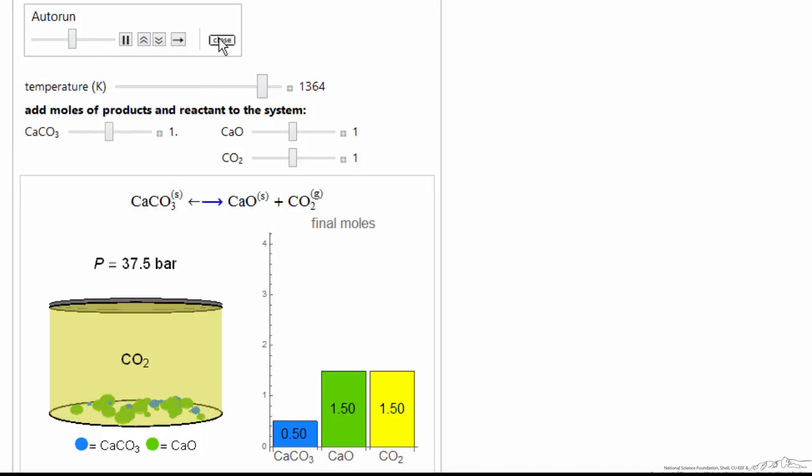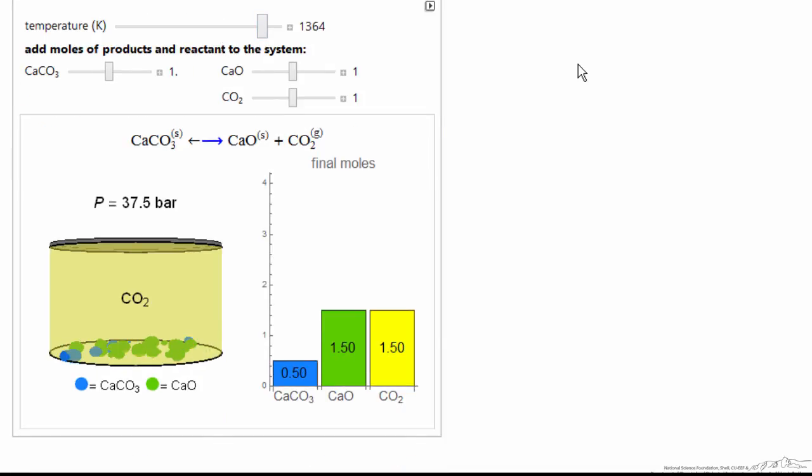We'll close this. So you should take this simulation and use it to better understand heterogeneous equilibrium. Because heterogeneous equilibrium is inherently different from when we have gas phase components on both sides. And we can reach equilibrium by lowering the pressure of one of the components. Here, because we have solids that don't mix, it's an all or nothing situation.